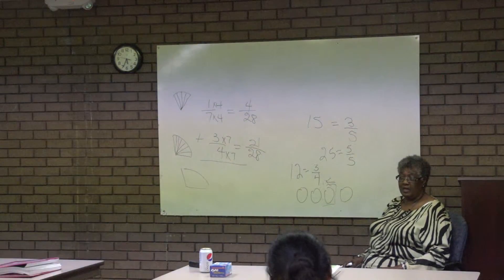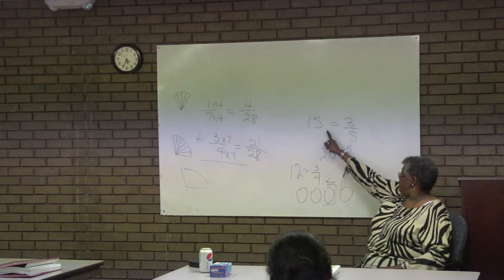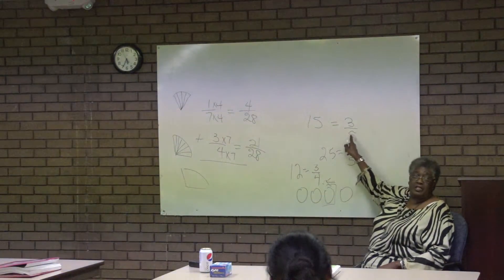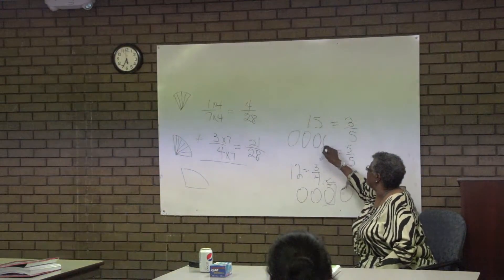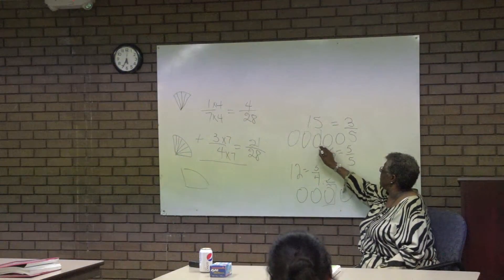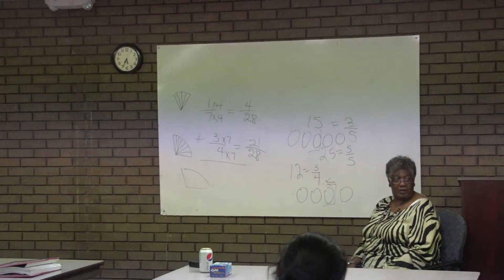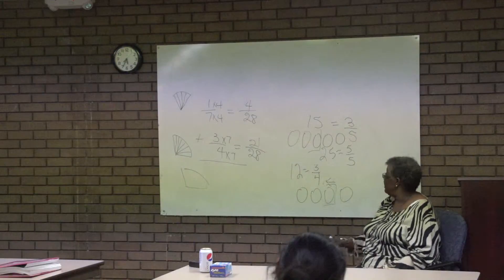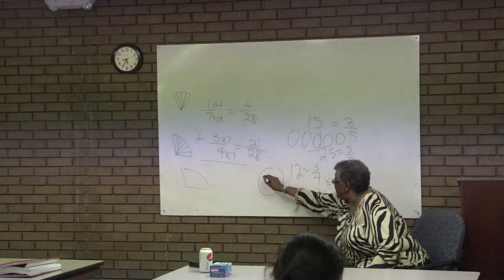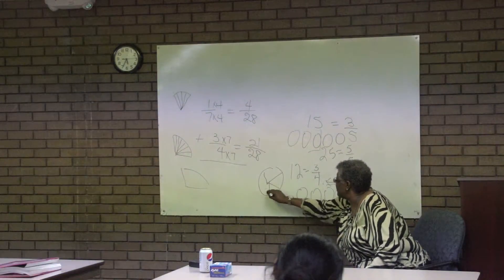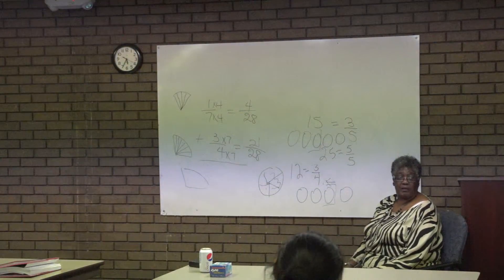You understand what I'm saying? Three-fourths — if I said 15 is three-fifths, it's telling me there are five pieces in the whole, and I just have three of them. Three-fifths means that there are five pieces in the whole thing. I took a whole pizza and cut it into five pieces — that's what that means. And I have three of those pieces.